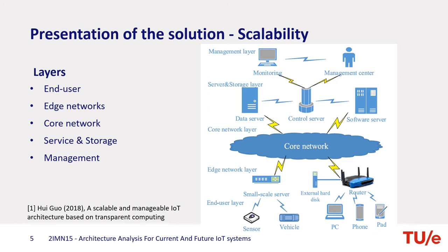In the edge network layer, edge devices such as high-performance routers and small scalable servers collect and process the end-user data from the end-user layer, then send processed data to the service and storage layer via the core network layer. The core network layer is mainly made up of a variety of network communication methods. It is a bridge between the edge network layer and the service and storage layer.